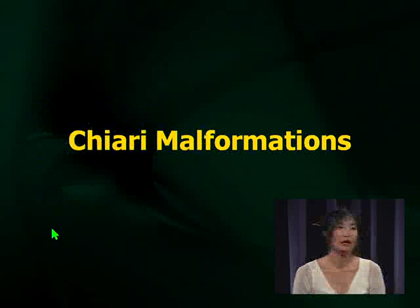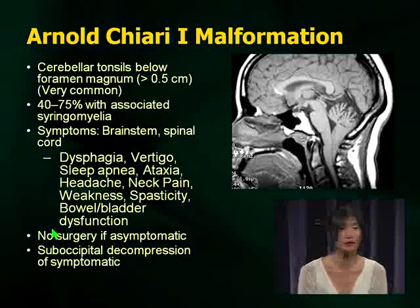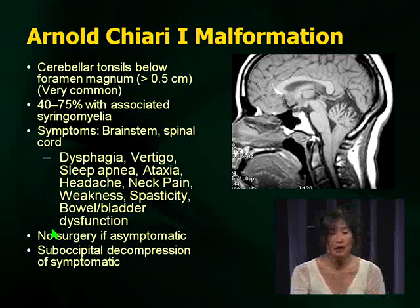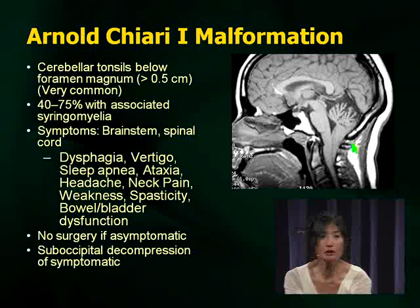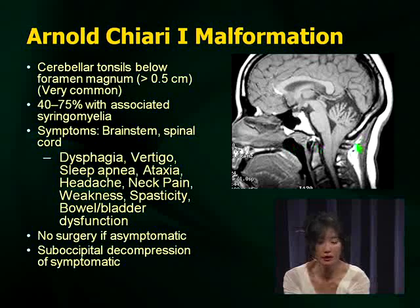Chiari malformations. We love to hate Chiari 1 malformations because they're seen so frequently. As neurologists we do a lot of MRI scans, and as we've increased in frequency, awareness of Chiari 1 malformations is more and more. The rules for Chiari malformations: the foramen magnum is here. The protrusion of the cerebellar tonsils is 0.5 centimeters below the foramen magnum. You draw a line and measure — if it's more than 0.5 centimeters, you've got a Chiari malformation.